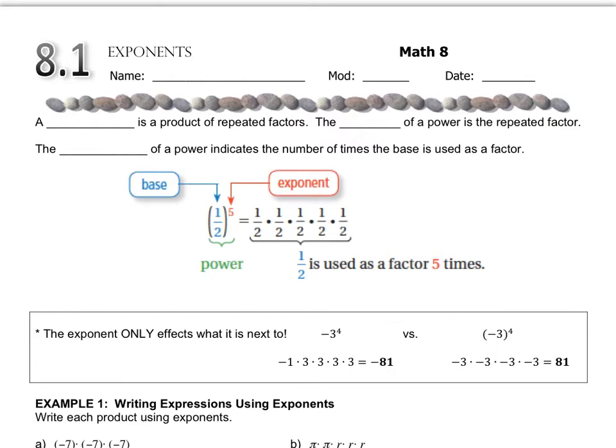One word that we use when we're talking about exponents is the word power, and a power is a product of repeated factors. The base of the power is the repeated factor, and the exponent of the power indicates how many times you use that factor.